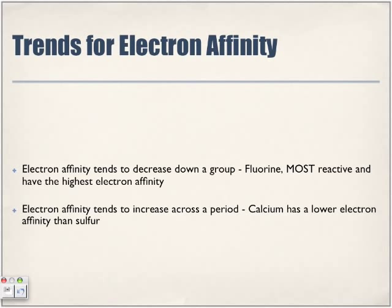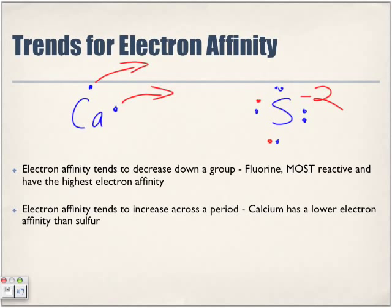Electron affinity tends to increase across a period. Calcium has a lower electron affinity than sulfur. Because calcium has two valence electrons and does not have a strong affinity — it wants to get rid of those two electrons. Sulfur has six valence electrons and has a stronger electron affinity because it wants to pick up two electrons to become stable. That's why sulfur has a more increased electron affinity than calcium — sulfur, as a non-metal, has a greater affinity for that electron.